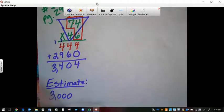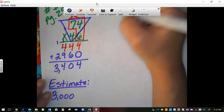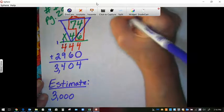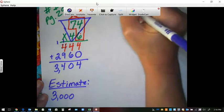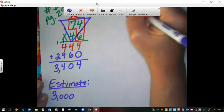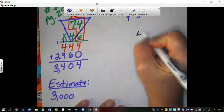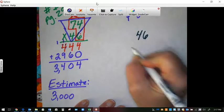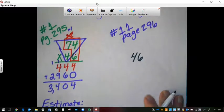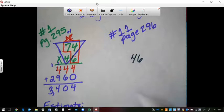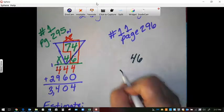Alright, let's do another one. So on the back, number 11, on page 296. I'm going to do the strategy again. Alright, so number 11 has the problem 46 times 33.